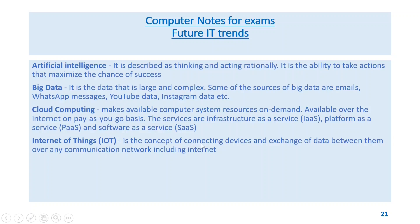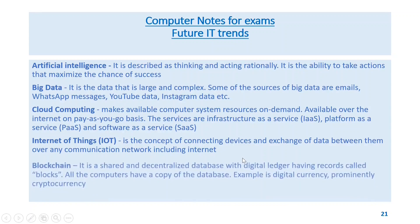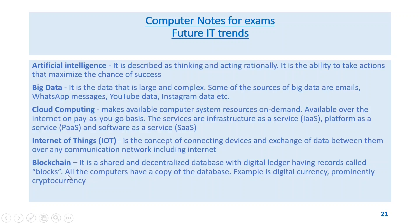Internet of Things (IoT) is the concept of connecting devices and exchanging data between them over any communication network including the internet. Blockchain is a shared and decentralized database with a digital ledger having records called blocks; all computers have a copy of the database. An example is digital currency, prominently cryptocurrency.